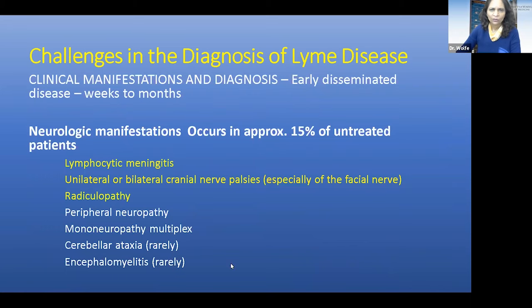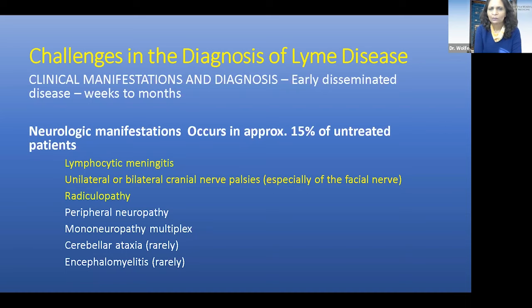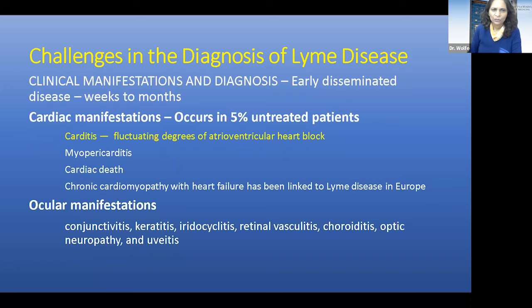For early disseminated disease, which can happen weeks to months after infection, neurologic manifestations occur in 15% of untreated patients and typically present with meningitis, cranial palsies, or radiculopathy. A bilateral cranial nerve palsy is seen in very few conditions, and Lyme disease is one of them — so if you see this in the summer, Lyme disease should be high on the differential. In terms of cardiac manifestations, the most common finding is varying degrees of AV block. Ocular manifestations can also occur, though less commonly.